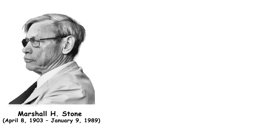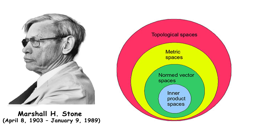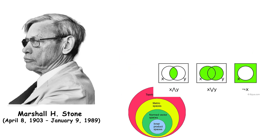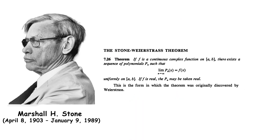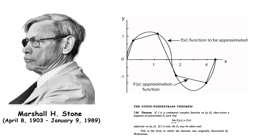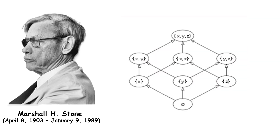Marshall H. Stone was an American mathematician known for his contributions to functional analysis, Boolean algebras, and topology. He developed the Stone-Weierstrass theorem, a fundamental result in approximation theory, and the Stone duality theorem, which connects Boolean algebras and topological spaces. His work has influenced various areas of mathematics.